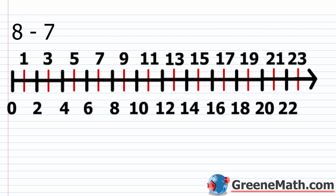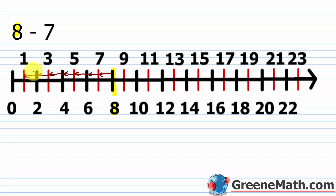Now we have 8 minus 7. We start out at the leftmost number on the number line, which is 8, and we're subtracting away 7, so we move 7 units to the left: 1, 2, 3, 4, 5, 6, and 7 units to the left, and we end up at 1. So 8 minus 7 is equal to 1.